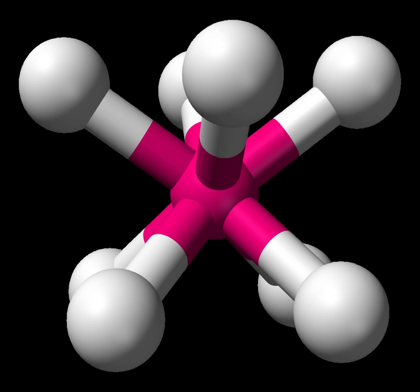Tetrahedral complexes are the second most common type; here four ligands form a tetrahedron around the metal ion. In a tetrahedral crystal field splitting, the d orbitals again split into two groups, with an energy difference of Δ_tet.